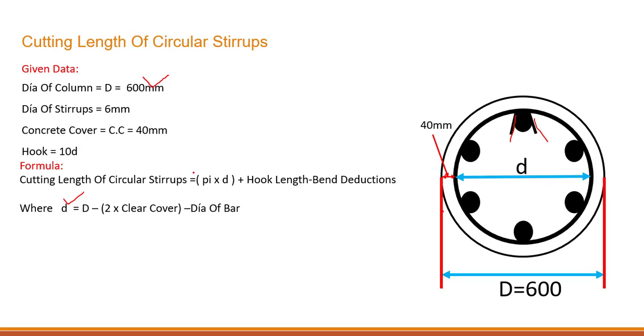Where D, this is Pi into D, this is the formula and we need to find out this D, this is very important. It will be equal to 2 into clear cover. From total D, the external D, we need to deduct the clear cover from both ends.